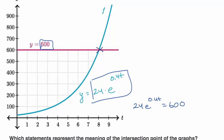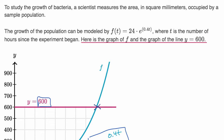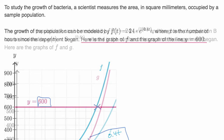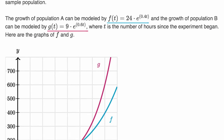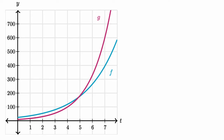Now let's keep building and go to the next part. Once again, we measure the area in square millimeters to figure out the growth — but now we have two populations. The growth of population A can be modeled by f(t) = 24e^(0.4t). They're also introducing population B, modeled by g(t), where t is the number of hours since the experiment began. Here are the graphs of f and g — both growing exponentially, but at different rates.